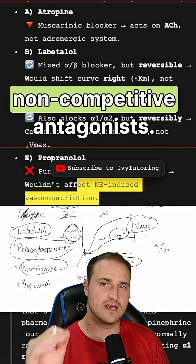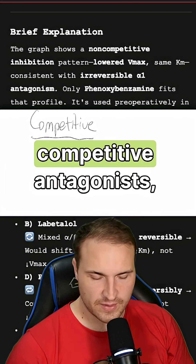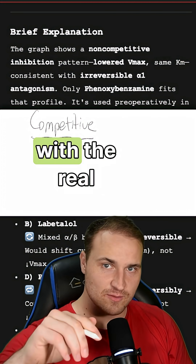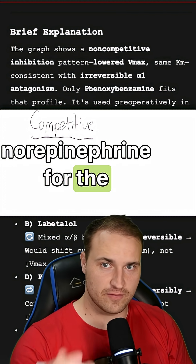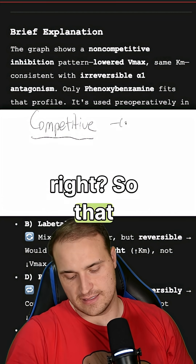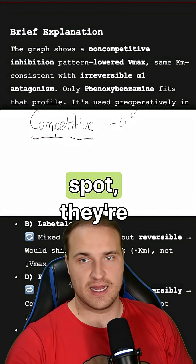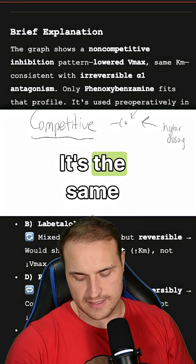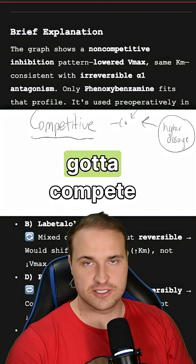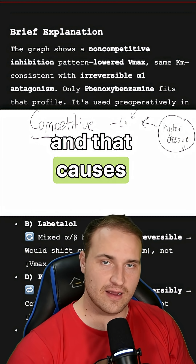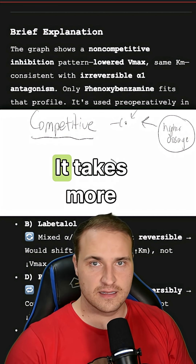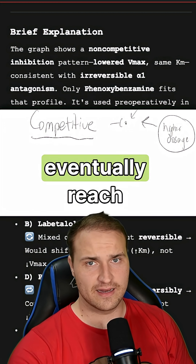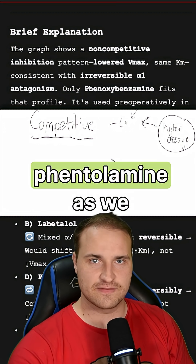Competitive versus non-competitive antagonists. For competitive antagonists, think of 'let me in' — they're competing with the real ligand, like norepinephrine, for the exact same spot on the receptor. This can be overcome with a higher dosage, because it's the same spot, so you just compete harder. That causes the graph to shift to the right — it takes more agonism to get the same effect, but it can eventually reach it, so the Vmax stays the same.